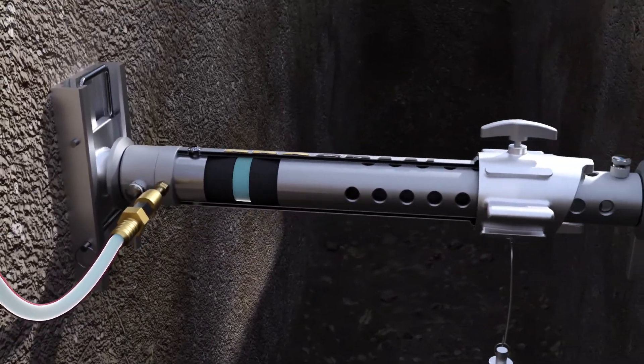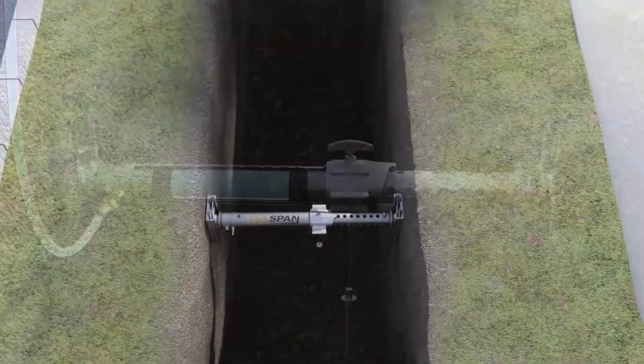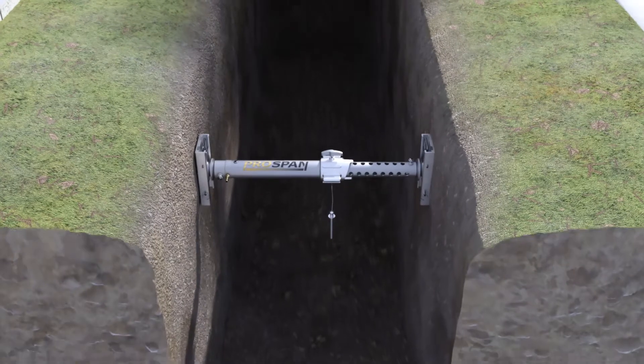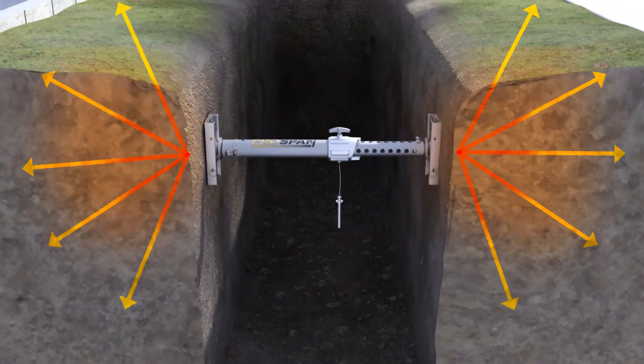As pressure builds within the ProSpan, the piston cups create an air seal which forces the piston outwards and into contact with the wall of the trench. Once contact is made, pressure continues to build, which in turn causes the soil to compact in all directions.